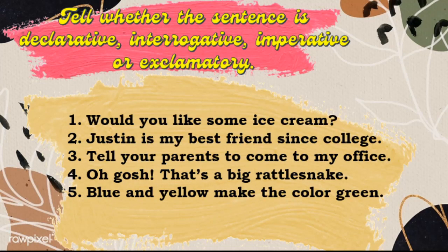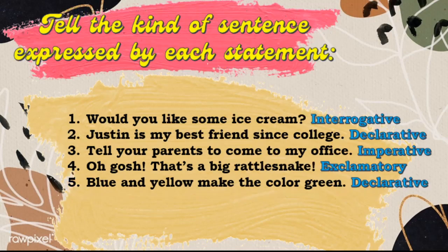Now, I want you to tell whether the sentence is declarative, interrogative, imperative, or exclamatory. You may pause this video while answering the activity. Here are the correct answers. Number one: would you like some ice cream? — that is an interrogative sentence. Number two: Justin is my best friend since college — that is declarative. Number three: tell your parents to come to my office — that is imperative. Number four: oh gosh, that's a big rattlesnake — that is an exclamatory sentence. Number five: blue and yellow make the color green — that is a declarative sentence.